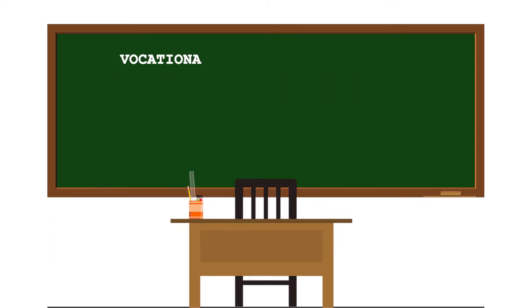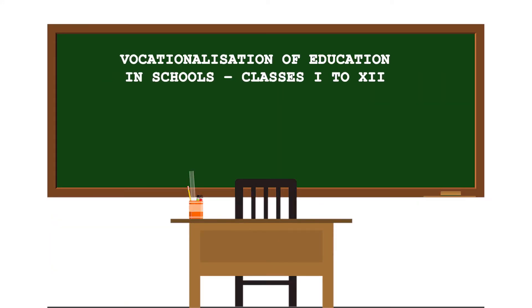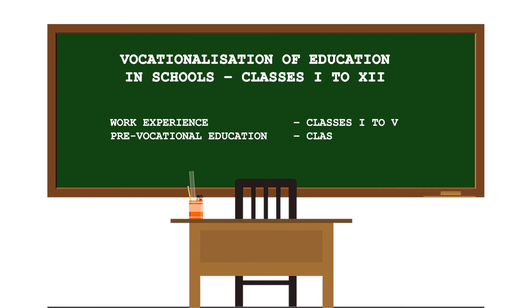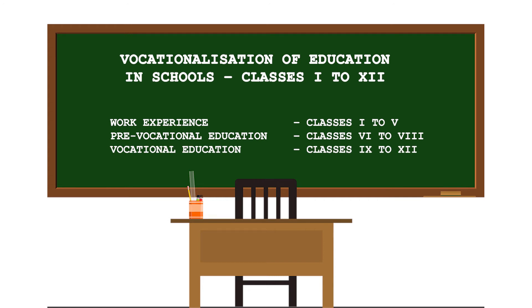Vocationalization of education has been divided into three parts: the first is work experience from classes 1 to 5; the second is pre-vocational education from classes 6 to 8; and the third is vocational education from classes 9 to 12.